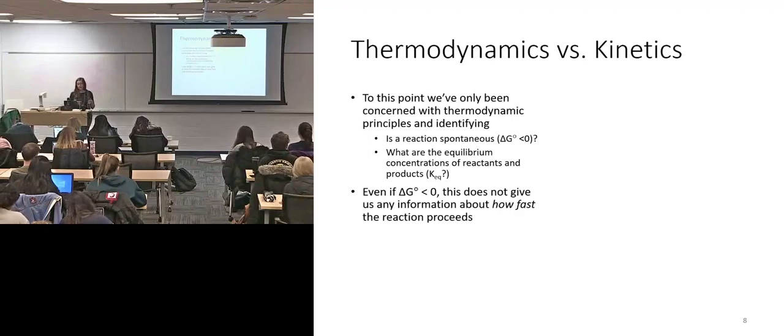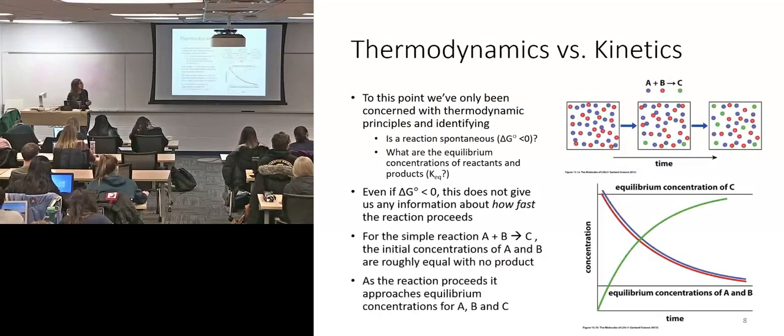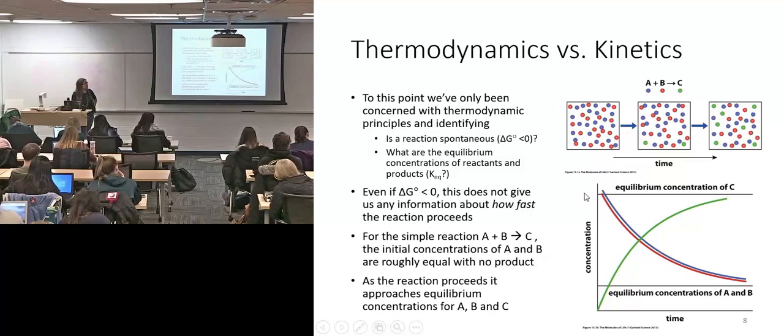If delta G is less than zero, it gives you no information about how fast something is proceeding. Here's a simple reaction. We have A and B converting to C. In this particular case, initial concentrations of A and B are roughly equal, and we have no product.